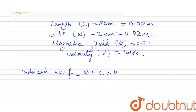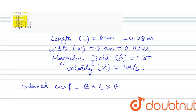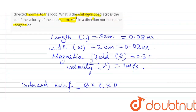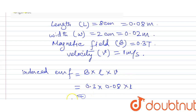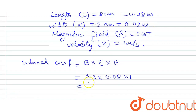If the magnetic field is along L, the formula BvL applies using the long side length of 0.08 m. Putting in the values: B = 0.3 T, v = 1 m/s, L = 0.08 m. The calculation gives 2.4 × 10 to the power minus 4. So the induced EMF e is equal to 2.4 × 10⁻⁴ volt.